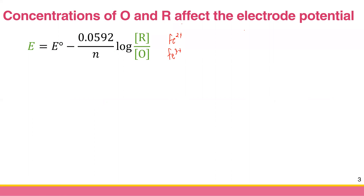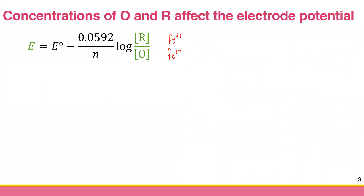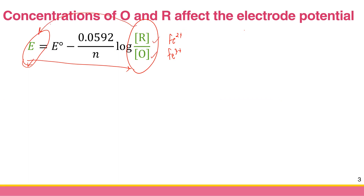Vice versa, if we can measure the electrode potential, then we can quantify the concentrations. In the first chapter, you were given the concentrations of O and R and asked to calculate E. But now in potentiometry, you are measuring E and going to calculate O and R — so this is the inverse problem.